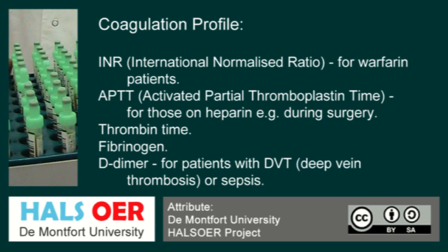Other factors such as thrombin time, fibrinogen, and D-Dimers are useful indicators of a patient's coagulation profile. D-Dimers are particularly useful in DVT patients, sepsis patients, and certain trauma patients where we need to know what kind of coagulopathy is going on.